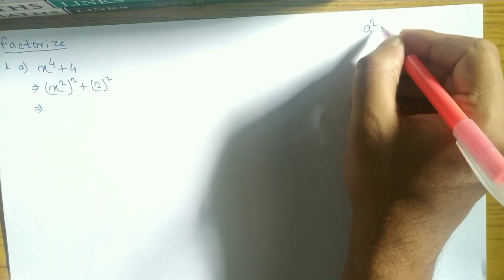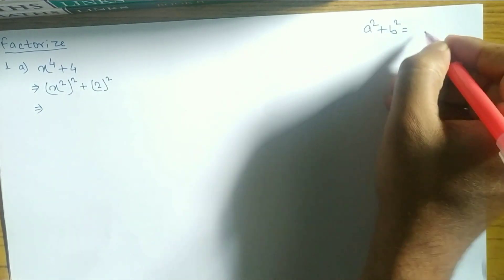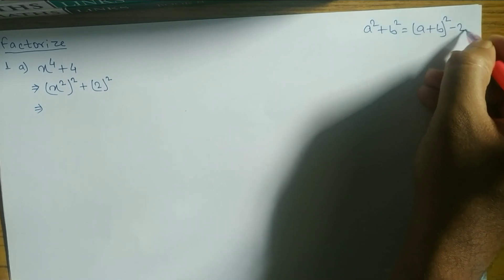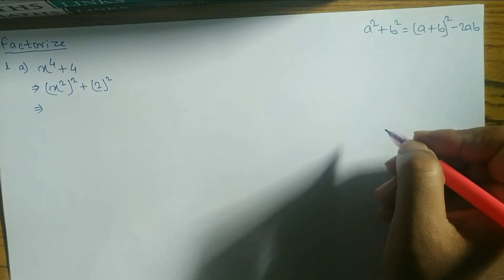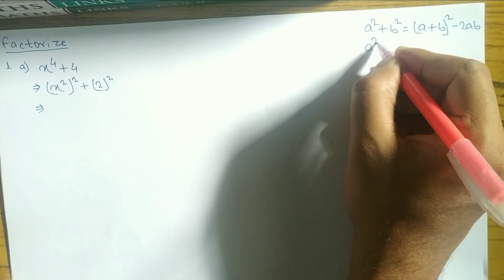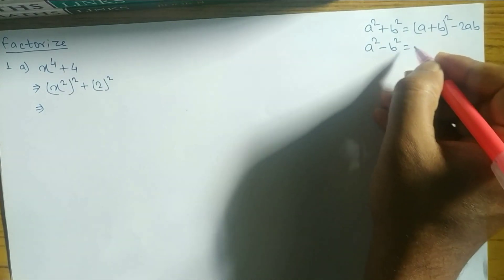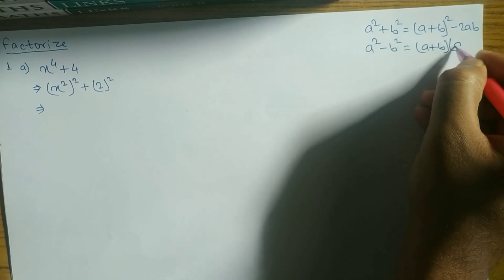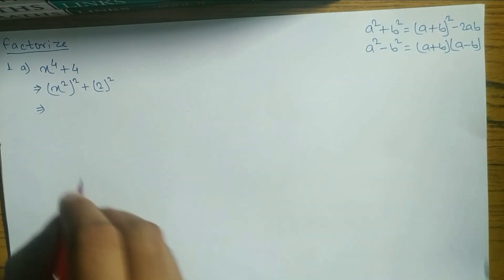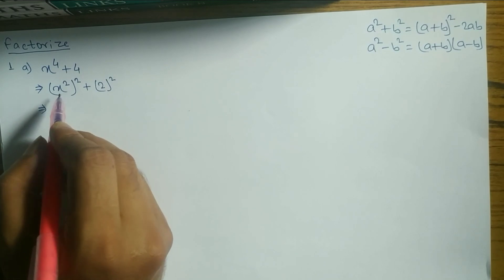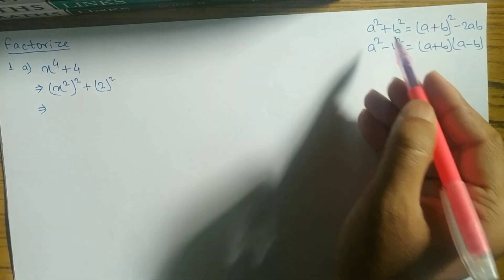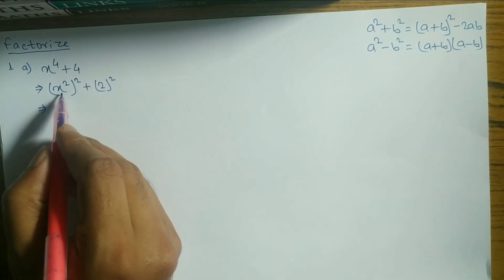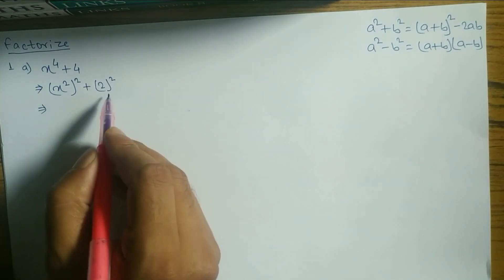The formula for a² + b² is: (a + b)² − 2ab. We need this formula here. We also need the formula for a² − b², which is (a + b)(a − b). Now this expression is in the form of a² + b², so we apply the formula: a² + b² = (a + b)² − 2ab. In place of a we have x², and in place of b we have 2.